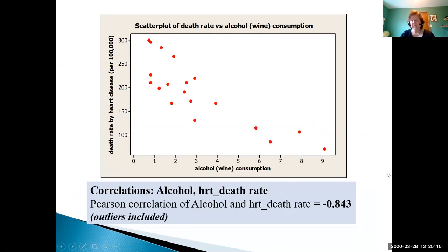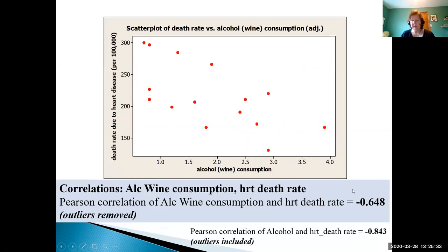If I take a look at the death rate versus alcohol wine consumption looking at all the data points together, negative 0.843. What about these four points up here though? These could be possible outliers. So what would happen if we took those points out? Here's the original one at negative 0.843. We have now removed the outliers and notice how the correlation coefficient has dropped quite a bit.